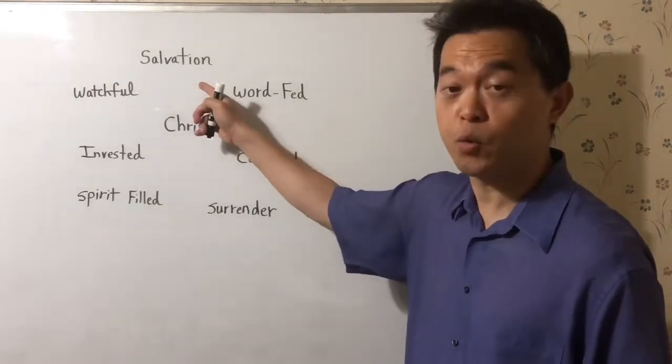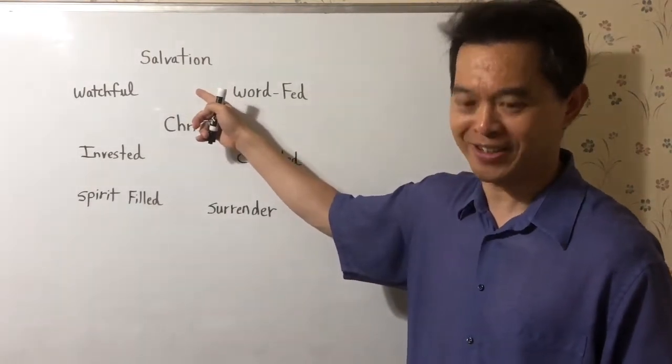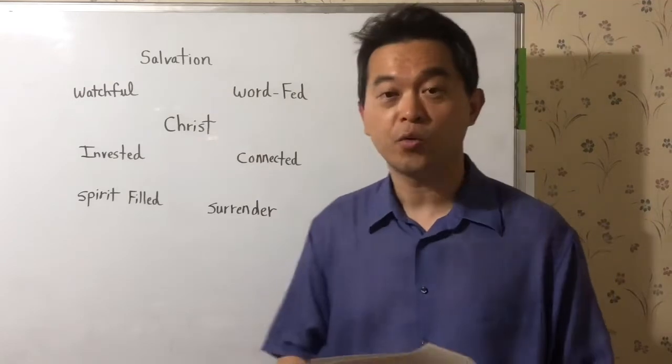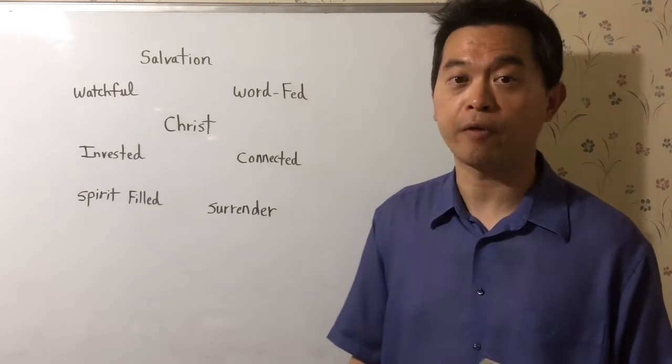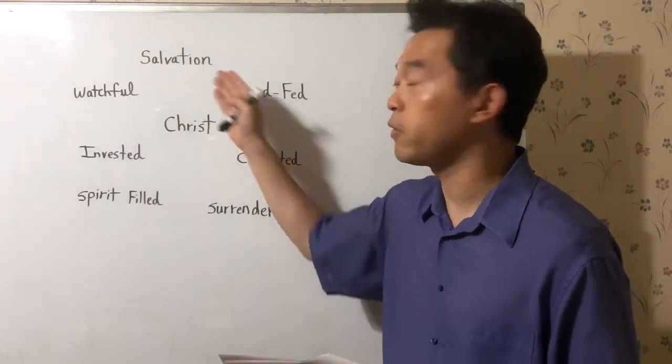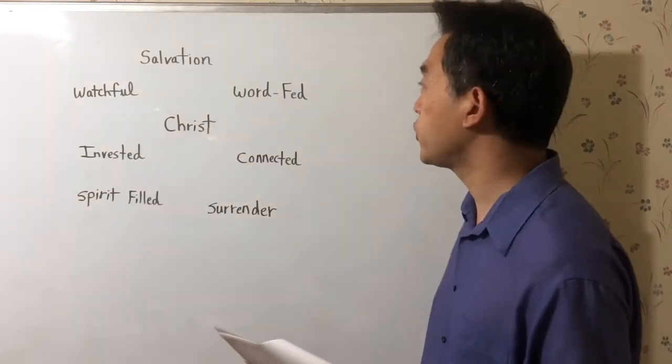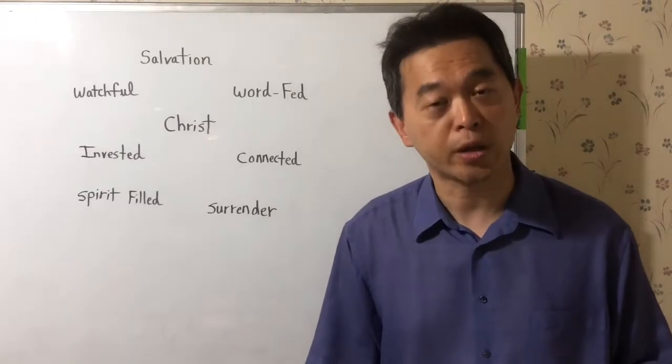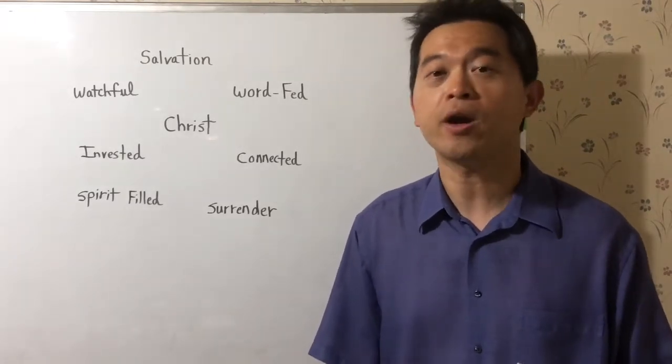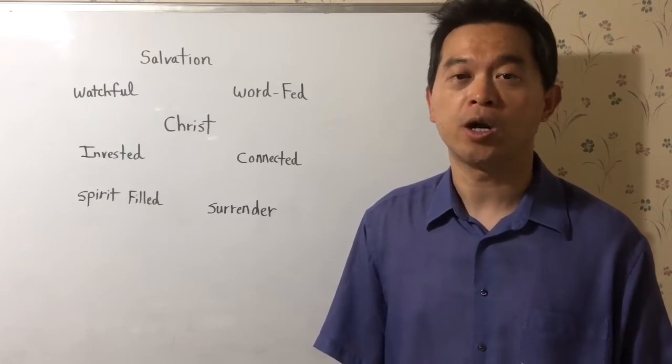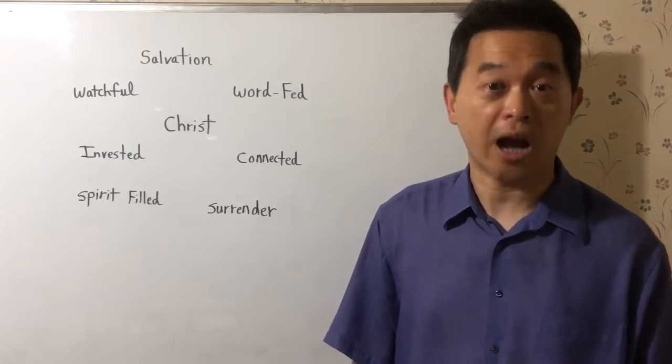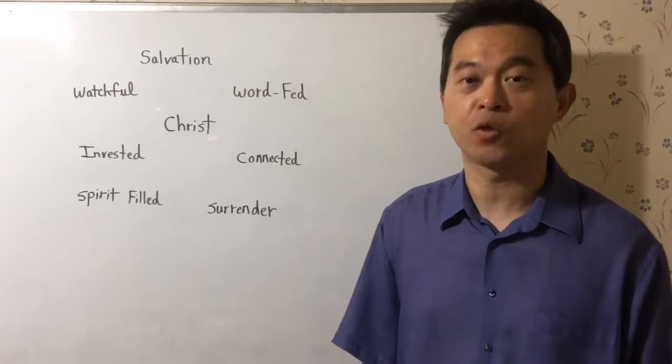To become a disciple, we must first be saved. We are born again and saved by the Word of God. We are saved by grace through faith, but it is through hearing the Word of God. For 1 Peter 1:23 says, we are born again, not of corruptible, but of incorruptible, of the Word of God, which lives and abides forever.